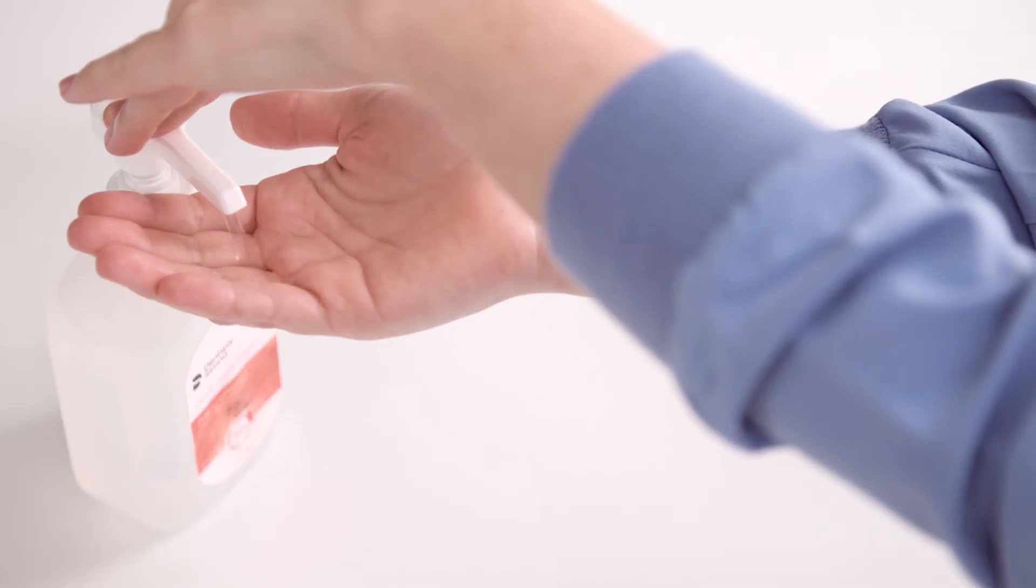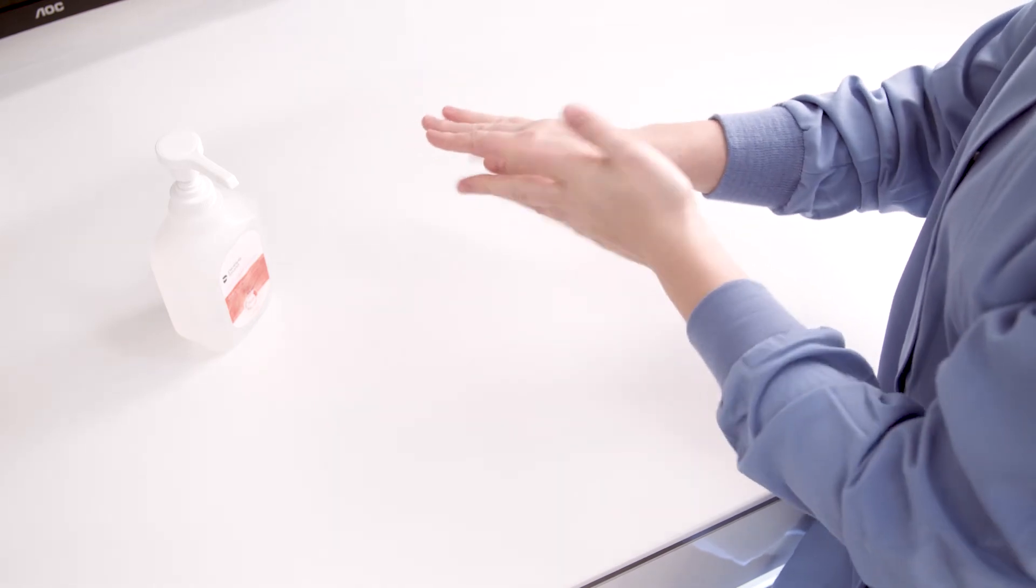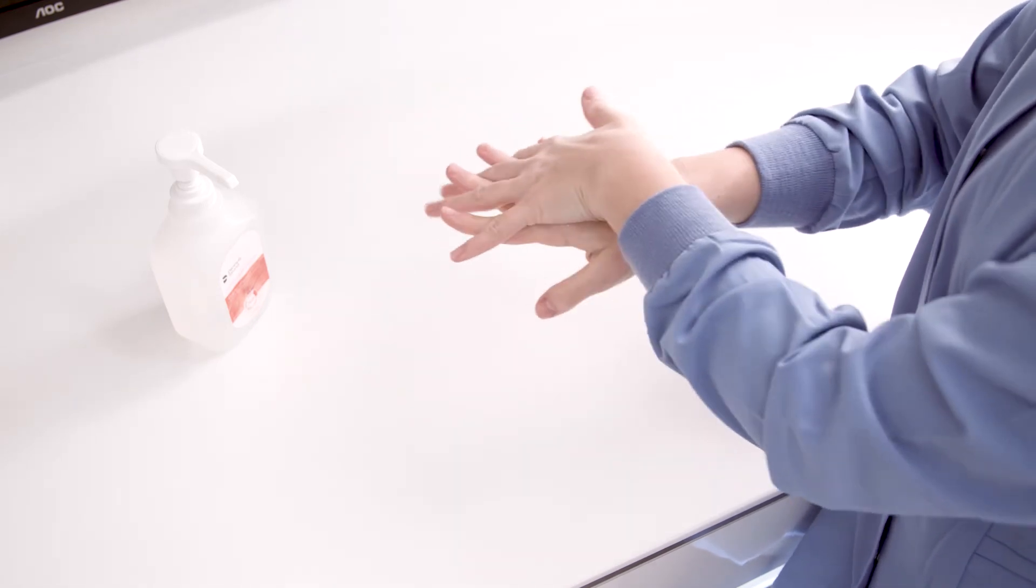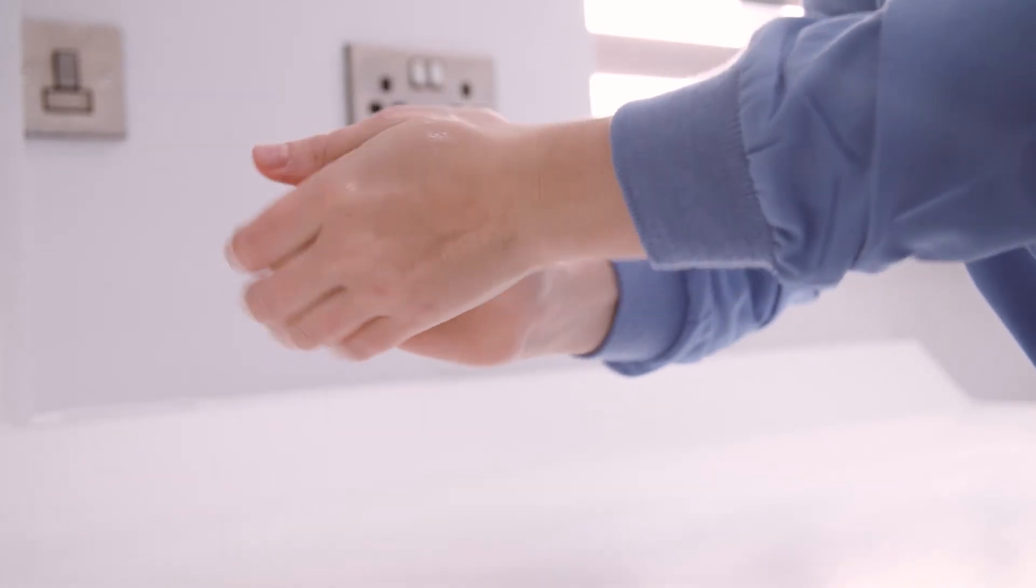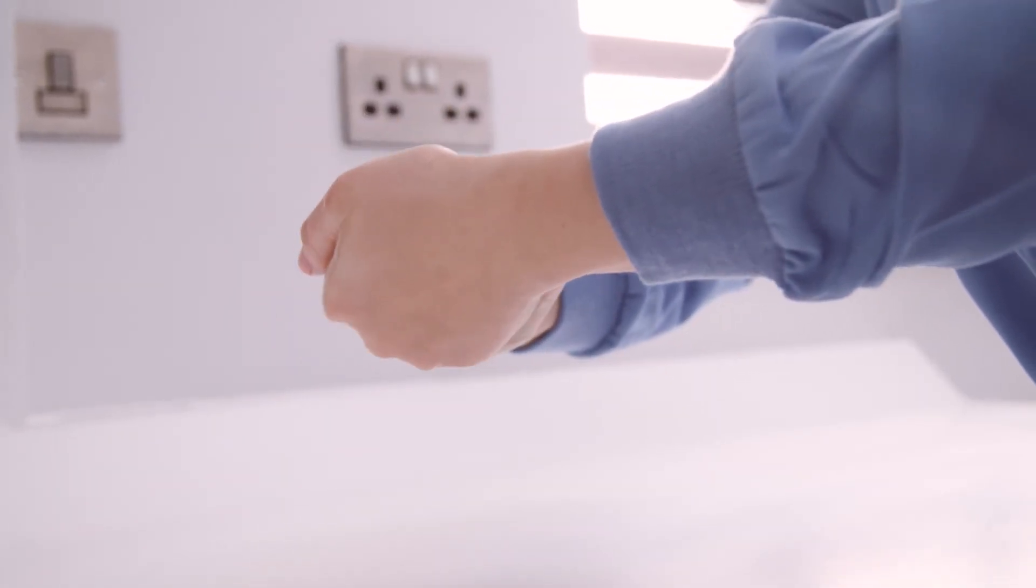Begin with the proper amount of hand sanitizer in hands. Rub the back of each hand and in between fingers, rub between fingers on the inside of your hands, interlock fingers and rub together.